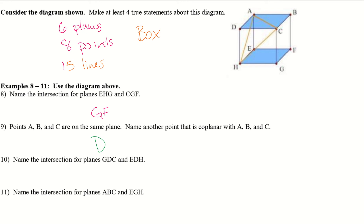Name the intersection for planes GDC and EDH. GDC is this plane right here, and EDH is right here. I want to know where these two planes intersect — they're going to intersect right here. So we write DH, because that's where these two planes intersect one another.